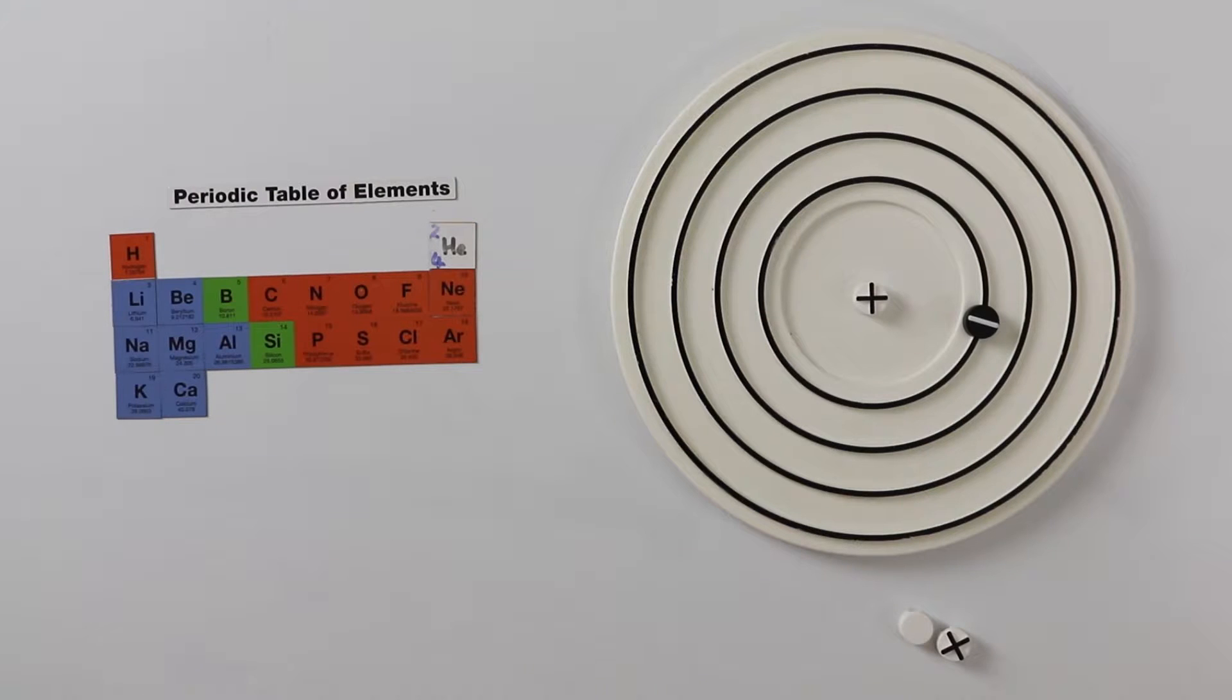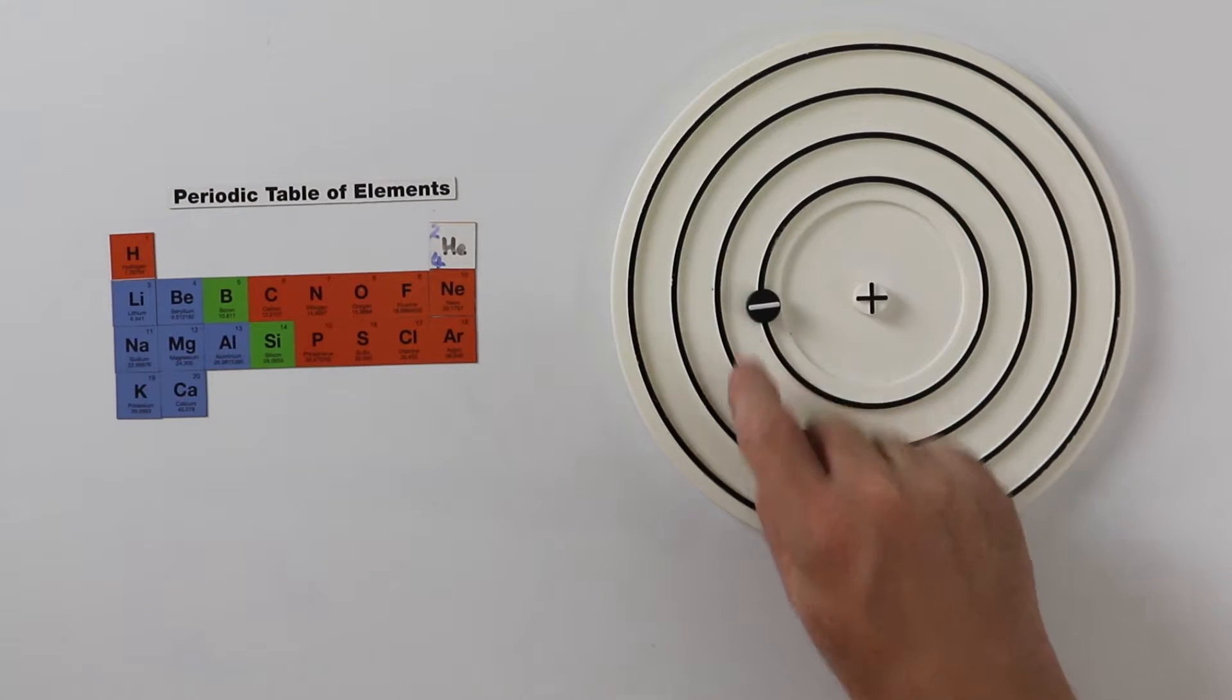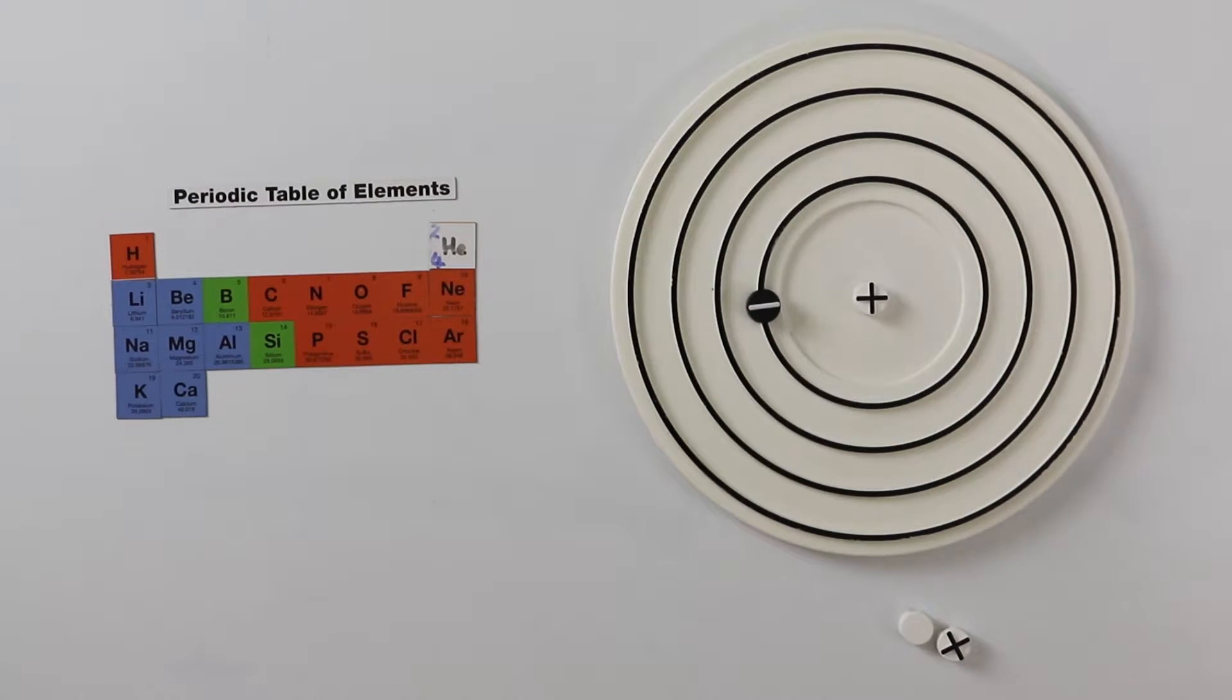The simplest atom is that of hydrogen. In its common form it has one proton, which is the plus indicated here, and one electron circling in the inner layer known as the first shell. This we will call a minus. In an atom the number of pluses and the number of minuses must be equal.